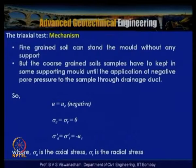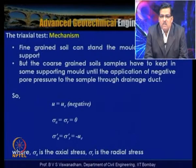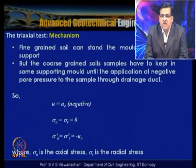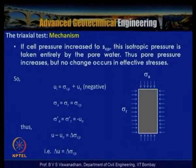Fine-grained soils can stand without support, but coarse-grained soil samples must be kept in a supporting mould until a negative pore water pressure is applied through the drainage duct to provide suction. If the cell pressure is increased to σ_cp, the isotropic pressure is taken entirely by the pore water and pore pressure increases, but no change occurs in effective stress as long as there is no volume change.